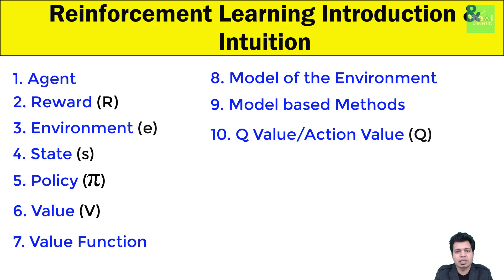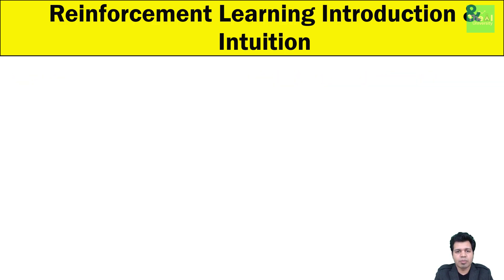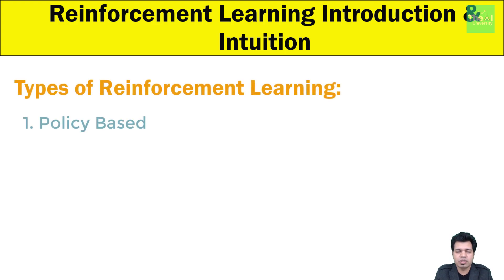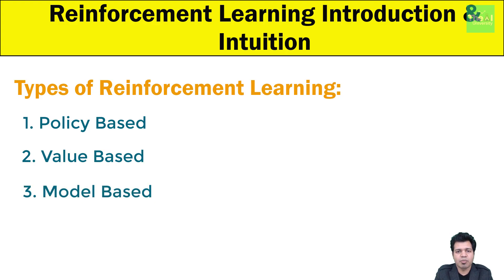As far as reinforcement learning is concerned, there are three types. Since this is an introductory video, I will give an overview and create separate detailed videos later. Number one type is policy-based — the intent is to come up with a policy such that actions performed in each state help gain maximum reward in the future. Number two is value-based — the intent is to maximize a value function, where the agent expects a long-term return of current states under policy pi. Number three is model-based — the intent is to create a virtual model for each environment and the agent learns to perform in that specific environment only.